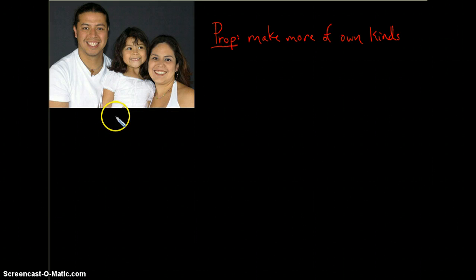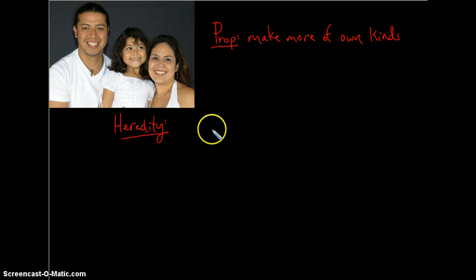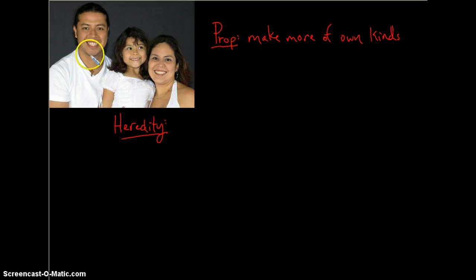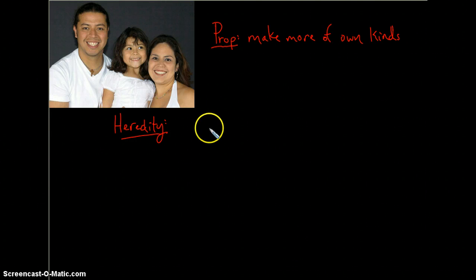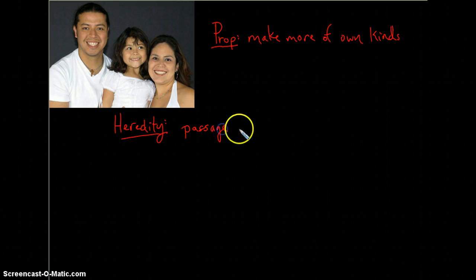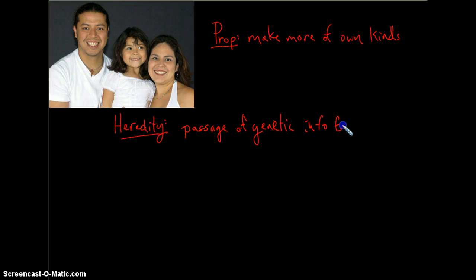Another important term related to this chapter is heredity. When we look at heredity, we're going to look at what gets passed on from parent to offspring — in particular, information. We talk about traits being passed on from one generation to the next, but most specifically, we're looking at information in the form of DNA that gets passed from parent to offspring during sexual reproduction. We'll refer to this as the passage of genetic information from the parent or parents to their offspring.